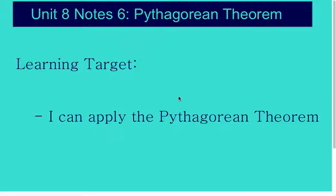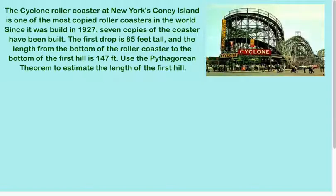So the Pythagorean Theorem deals only in right triangles, and right triangles mean that there's a right angle. The Cyclone roller coaster in New York's Coney Island is one of the most copied roller coasters in the world. Since it was built in 1927, seven copies of the coaster have been built. The first drop is 85 feet tall, and the length from the bottom of the roller coaster to the bottom of the first hill is 147 feet. Use the Pythagorean Theorem to estimate the length of the first hill.